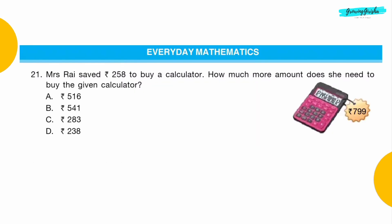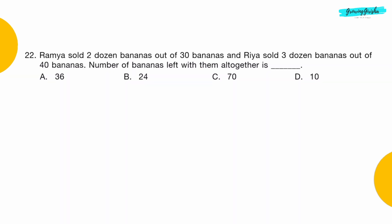Everyday Mathematics Question 21: Mrs. Rai saved Rs. 258 to buy a calculator. How much more amount does she need to buy the given calculator? Option B: Rs. 541.